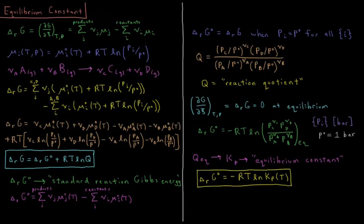This video will discuss the origin of the equilibrium constant for a reaction of ideal gases. From our previous video on extent of reaction, we defined our Gibbs energy change of reaction as the partial derivative of the Gibbs energy of the system with respect to the extent of reaction at constant temperature and pressure. This equals a sum over all products of their stoichiometric coefficients times their chemical potential, minus the same sum over all reactants.